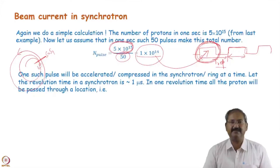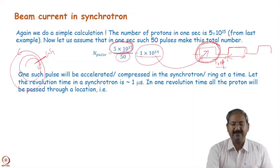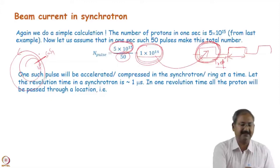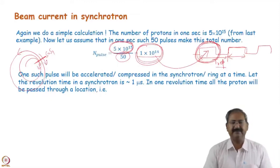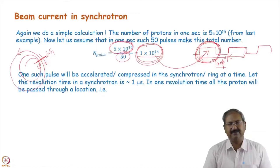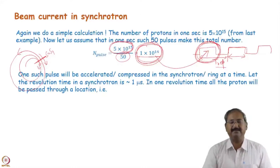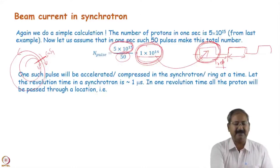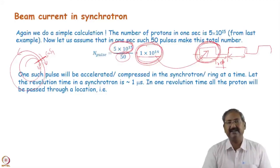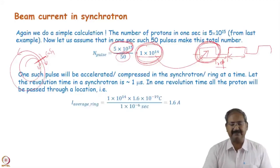If the revolution time is one microsecond in the synchrotron, that means in one microsecond this number of protons passes through the detector. A revolution time of one microsecond means all the protons will have passed within one microsecond, and this is the number of protons — so that many protons pass through this detector in one microsecond.